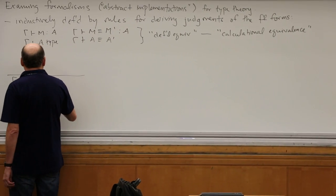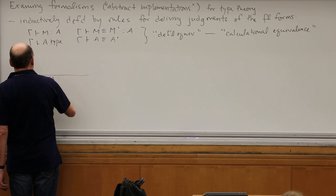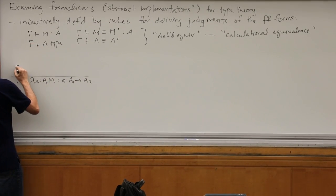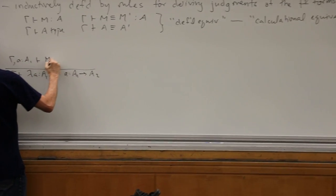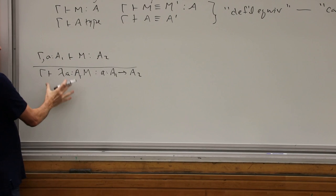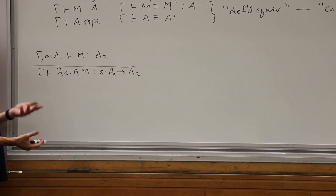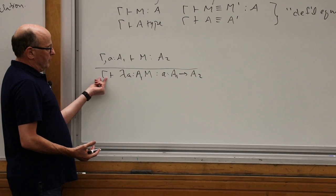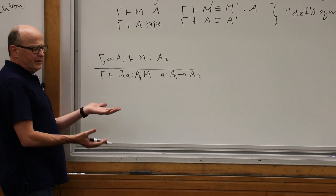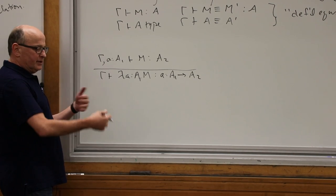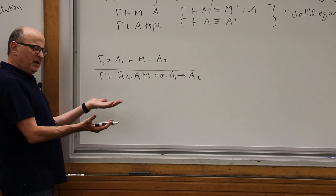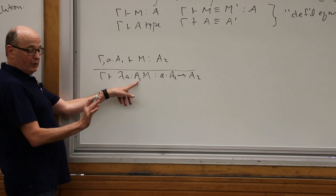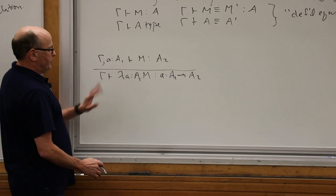We might have a term like a lambda introduction. There's often a type label here, and the reason for that is to help satisfy the criterion that if you tell me what the variables' types are and you give me a term, I can read off a type — a default or inferable synthesizable type for a term. Very often the thing to do is to put a type label there. This has to do with what's called extraction and erasure.